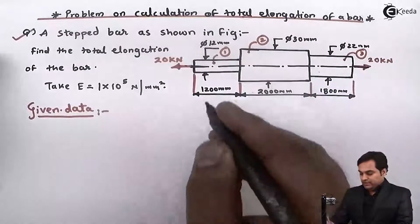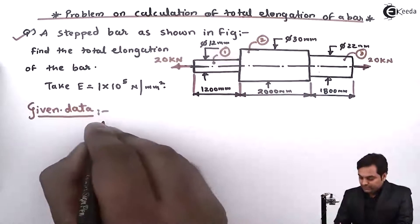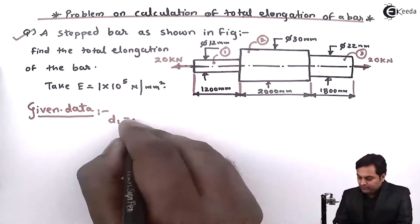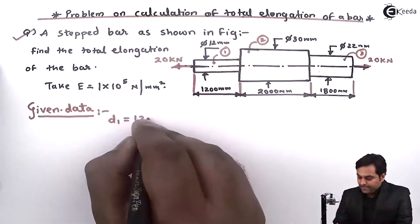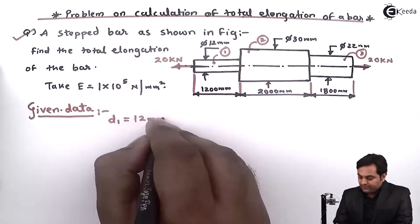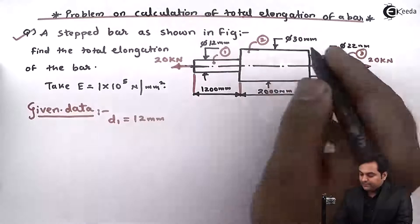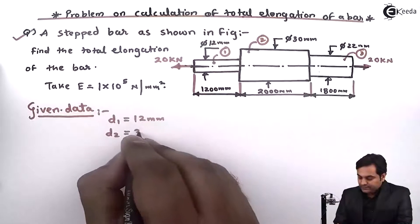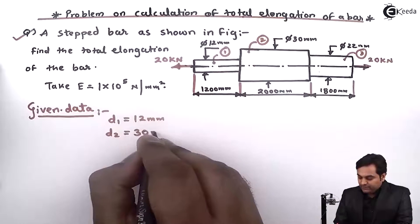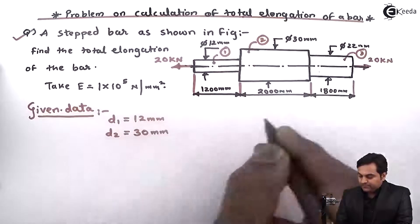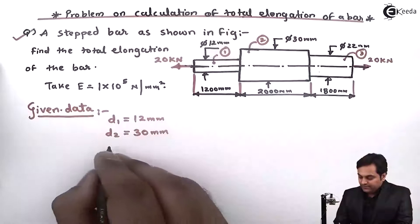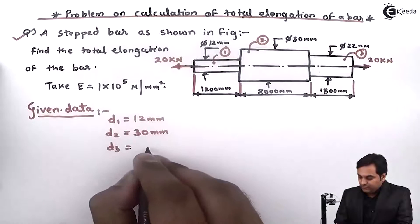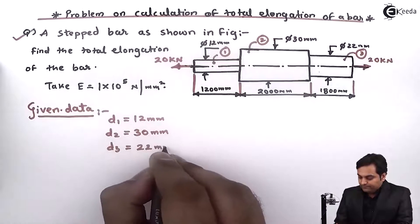So now I'll denote: D1 = 12 mm, D2 = 30 mm, D3 = 22 mm. And the lengths: L1 = 1200 mm, L2 = 2000 mm, L3 = 1800 mm. Young's modulus E = 1 × 10⁵ N/mm².